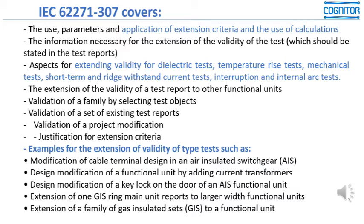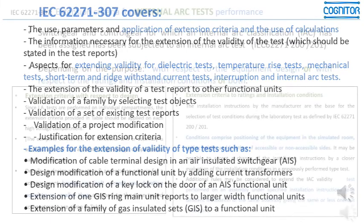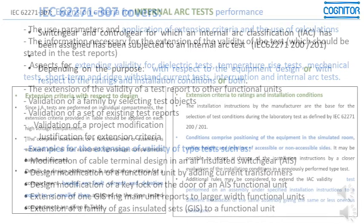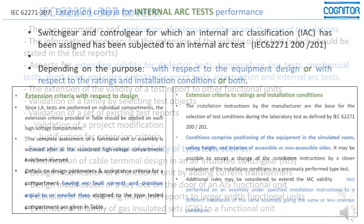Another example: the design modification of a functional unit by adding current transformers, or the design modification of a key lock on the door of an AIS functional unit. Suppose you improve the key lock on the doors to avoid the effects of internal arcs — you are doing a modification, and the user may not have a clear view of whether the additional rules may be considered to extend validity.